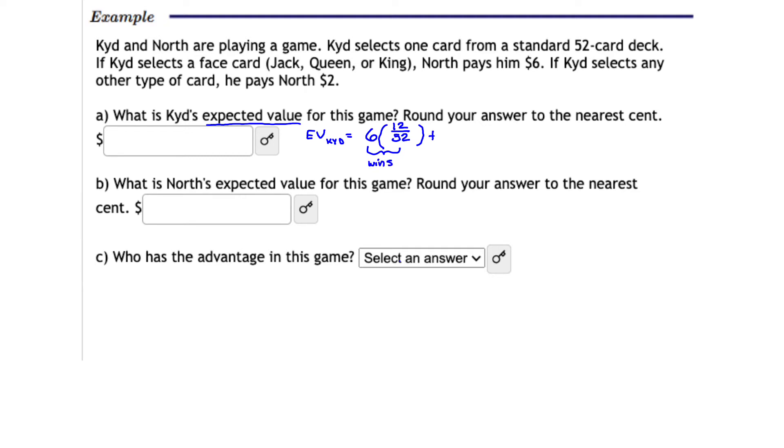Now how much does Kid lose? Well, Kid, if he selects any other type of card other than a Jack, Queen, or King, he has to pay North $2. That is, Kid will lose $2 if he selects any other card from his deck. So how many other cards are left in the deck? Well, if you select 12 face cards, if you count 12 face cards, then the number of not face cards is 40. So the probability of selecting not a face card is 40 over 52. This represents the loss part of the expected value in terms of Kid's perspective.